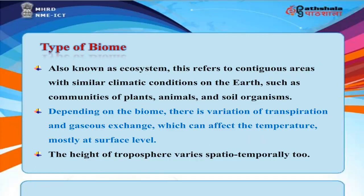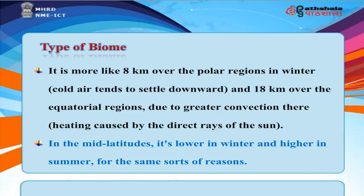Type of Biome. Also known as an ecosystem, this refers to contiguous areas with similar climatic conditions on Earth, including communities of plants, animals, and soil organisms. Depending on the biome, there is variation of transpiration and gaseous exchange, which can affect temperature mostly at the surface level. The height of the troposphere also varies spatio-temporally — about 8 kilometers over polar regions in winter, and 18 kilometers over equatorial regions due to greater convection and heating from direct rays of the sun. In the mid-latitudes, it is lower in winter and higher in summer.